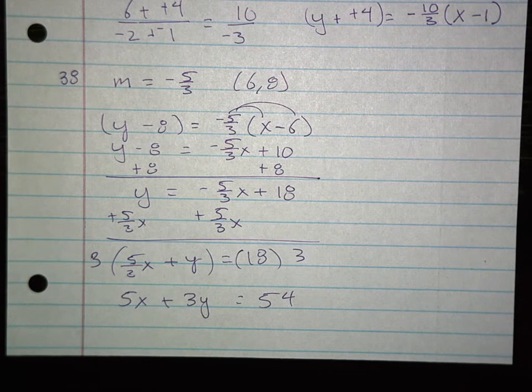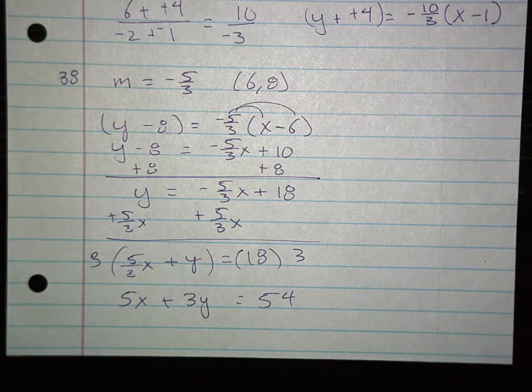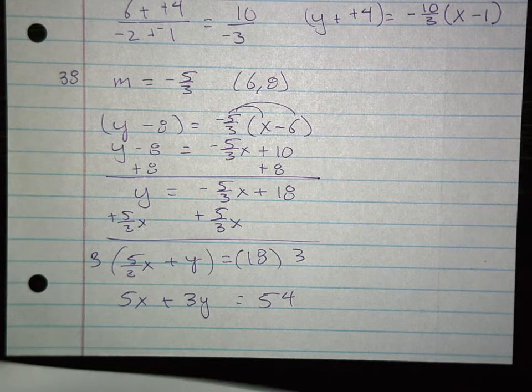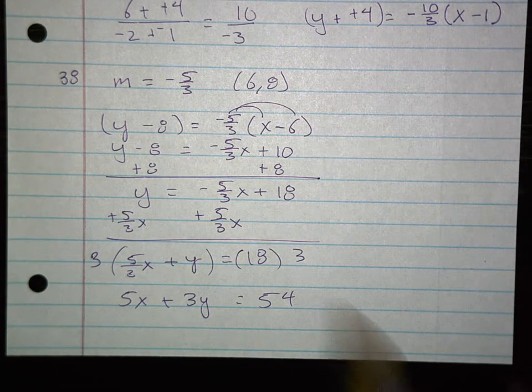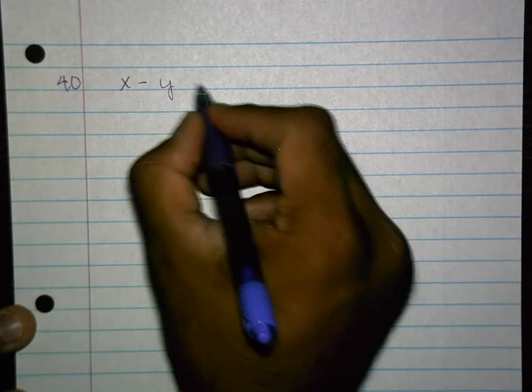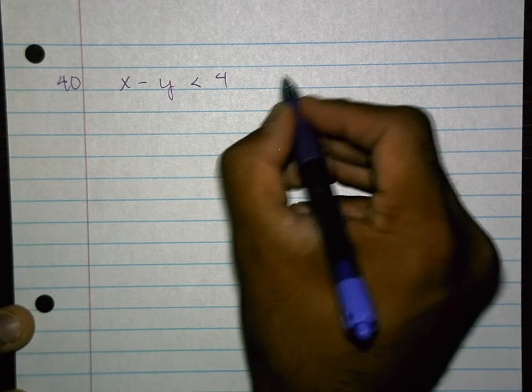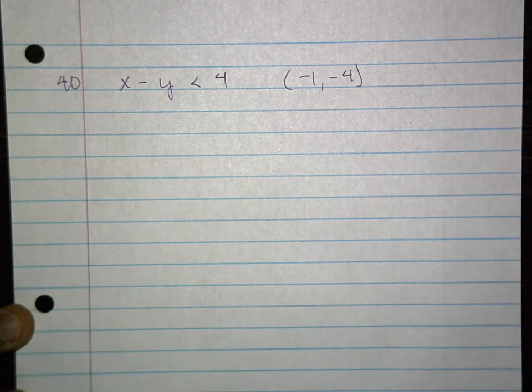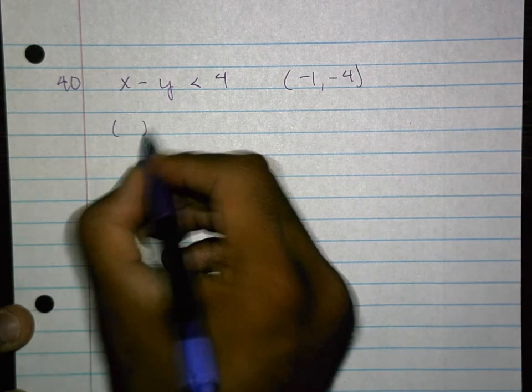Question 40 says determine whether the given ordered pair is a solution of the inequality. So that's simple. If you're ever given an equation or an inequality and a point, they want you to check it. Plug it in and see what happens. So we're going to plug these in.